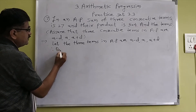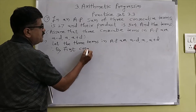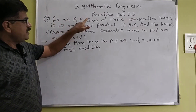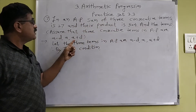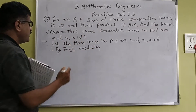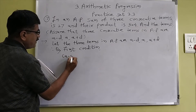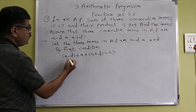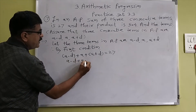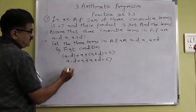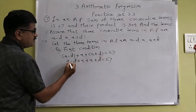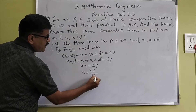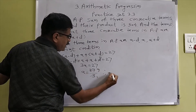By the first condition, the sum of three consecutive terms is 27. Therefore: (A minus D) plus A plus (A plus D) is equal to 27. Simplifying, minus D plus D cancels, giving 3A equals 27. Therefore, A equals 27 upon 3, so the value of A is 9.